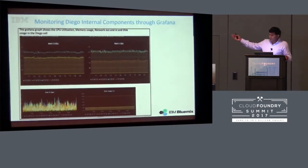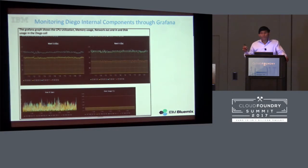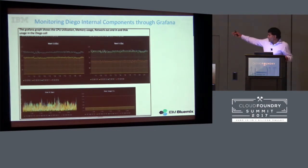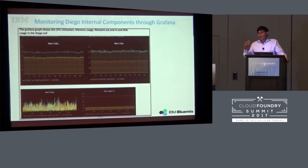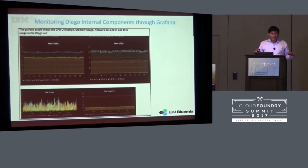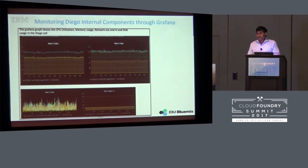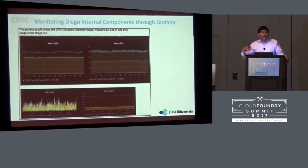Here you can see CPU, memory, network, and disk usage from specific Diego cells. In our Bluemix local environment with four Diego cells, you can see each one's CPU and memory, making it much easier to understand how applications are deployed across different cells — whether Node or Java — and how memory, CPU, and storage usage patterns look, including whether you have any disk bottleneck.